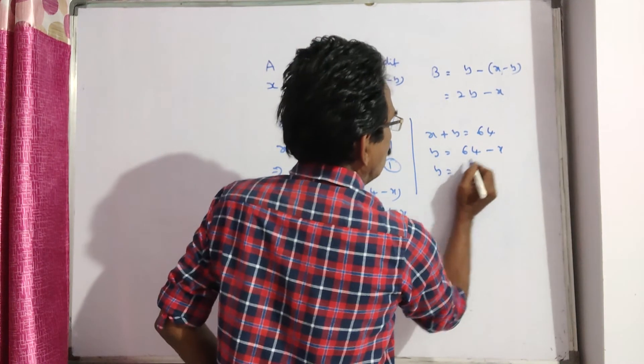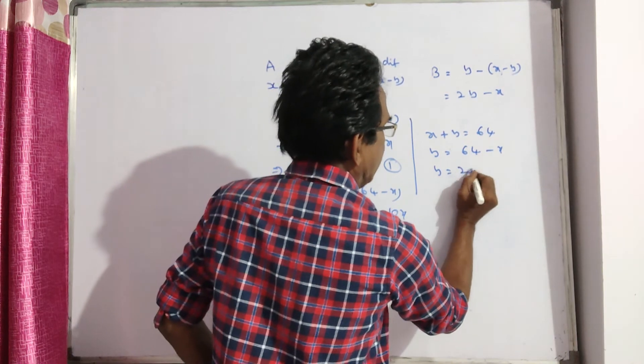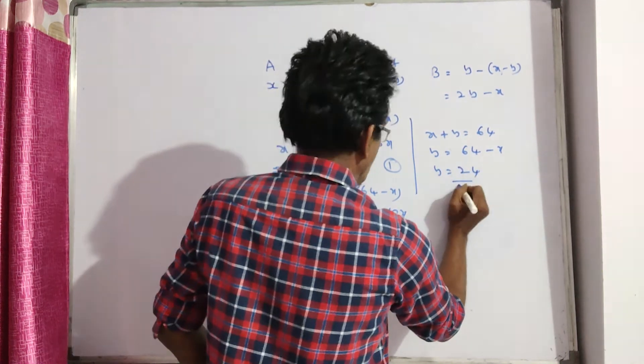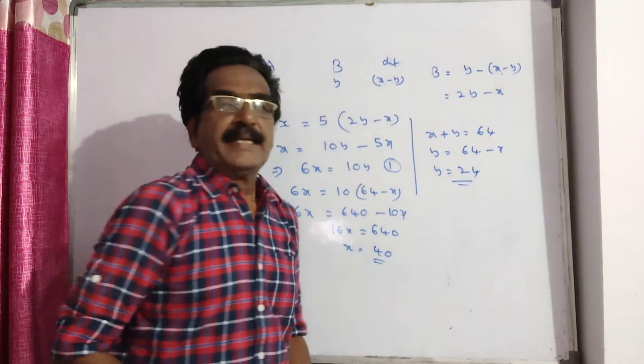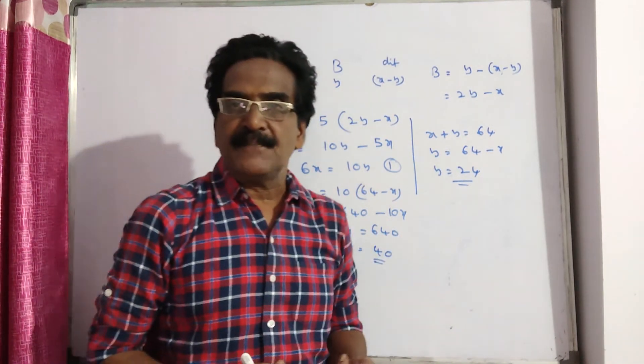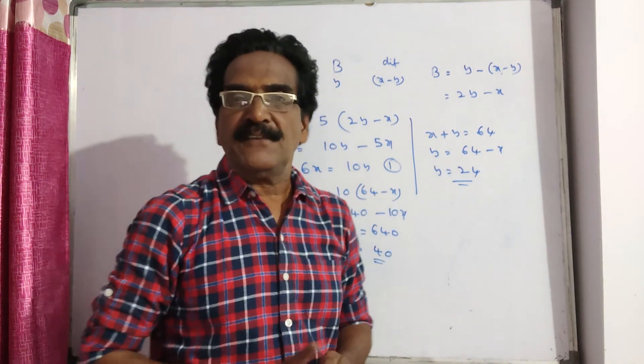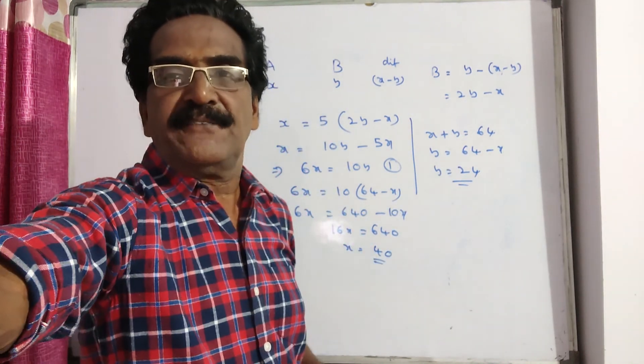Then y is equal to 64 minus 40, which is 24. So A is 40 years and B is 24 years. Okay friends, thank you.